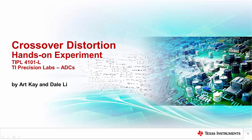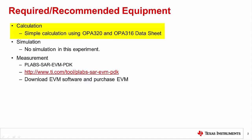In this experiment, we will measure the degradation of THD caused by crossover distortion. For this lab, we will use the OPA320 and OPA316 data sheet to show if the device has crossover distortion and the voltage level that the distortion occurs at. This experiment will not use simulation as SPICE models do not model THD and crossover distortion.